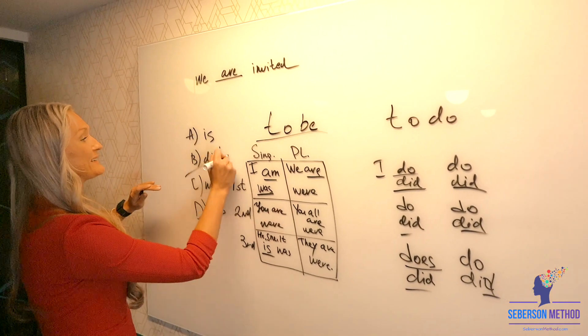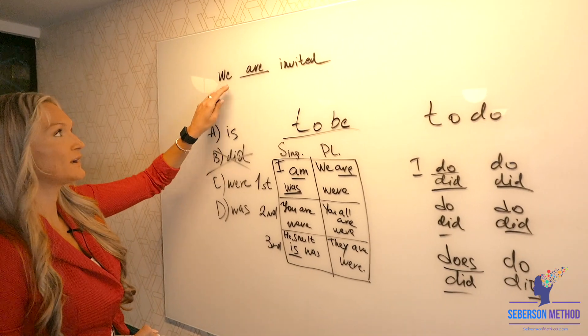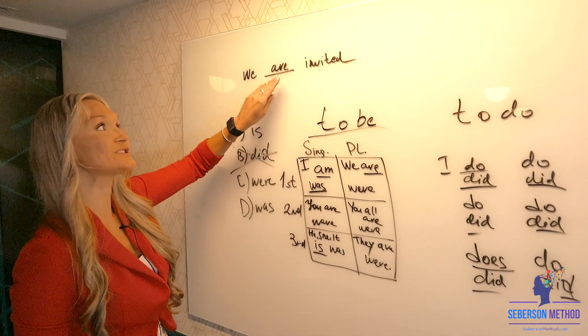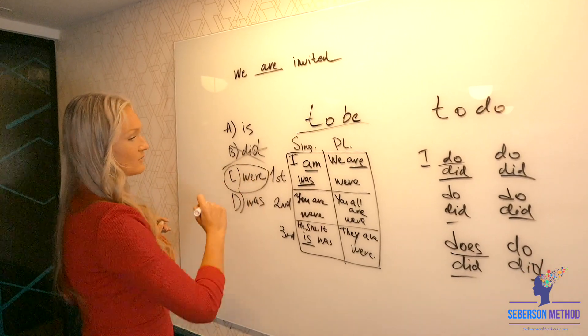Because did is a completely different verb. That's a verb to do. It's not a verb to be. We are invited. The initial verb is to be invited. And then we were would be the proper form.